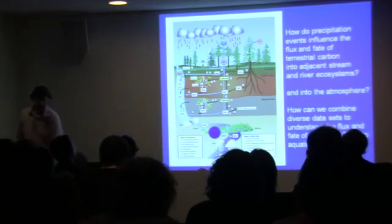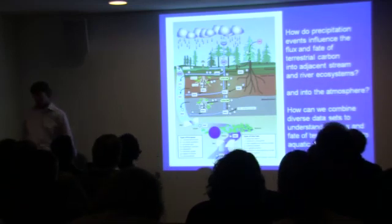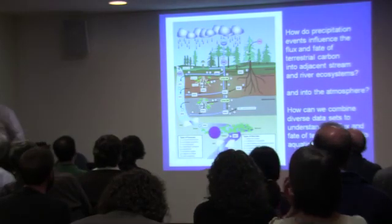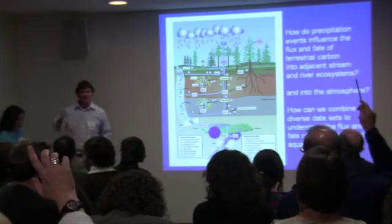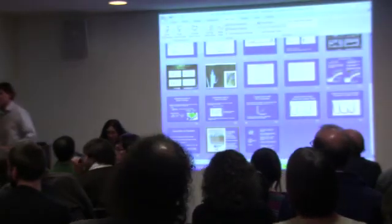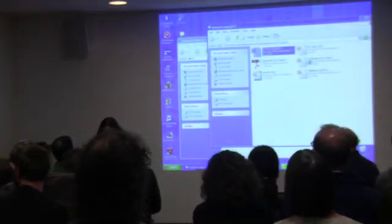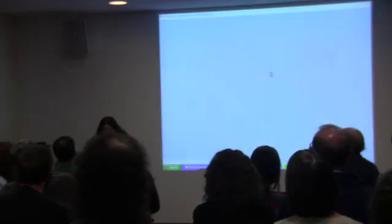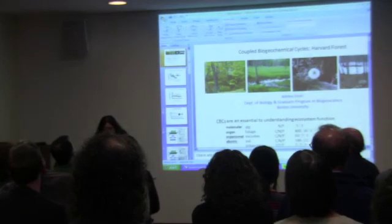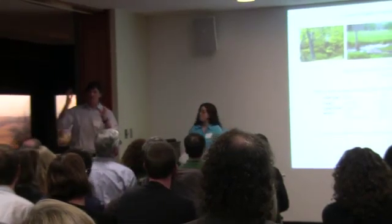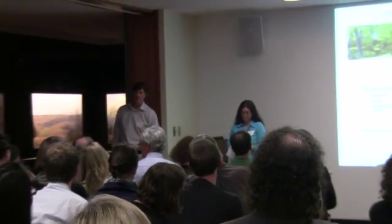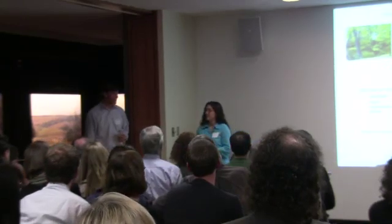Thank you. We have time for a micro-question. Is most of the DOC coming from the mineral horizons of the soils? We think the DOC is coming from forest soils, which would account for the continuous pulse of DOC regardless of the storm event. We initially thought eventually the DOC would dilute and run out, but it doesn't. So we think soil-derived DOC is the main major pulse in terms of large storm events.